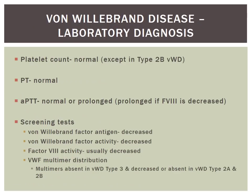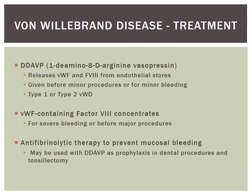Laboratory diagnosis of von Willebrand disease: platelet count is generally normal, except in type 2b which has associated thrombocytopenia. PT and APTT are generally normal, except patients with type 2m who also have a factor 8 deficiency will have a prolonged APTT. Screening tests include decreased von Willebrand factor antigen, decreased von Willebrand factor activity, and often decreased factor 8 activity especially in type 2m. On von Willebrand factor multimer distribution, multimers are absent in type 3 and decreased or absent in types 2a and 2b.